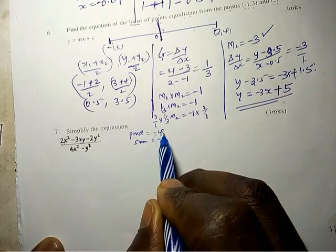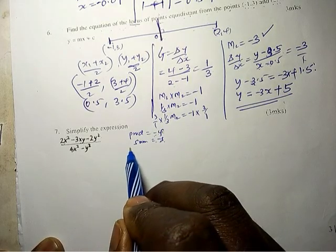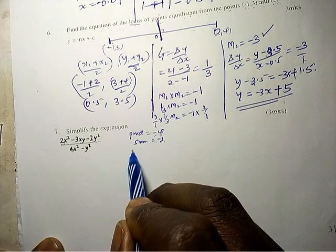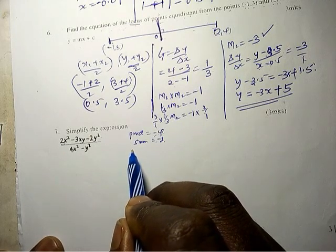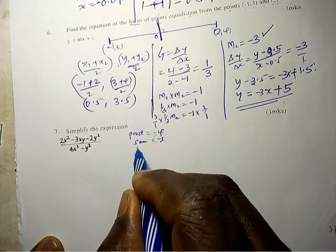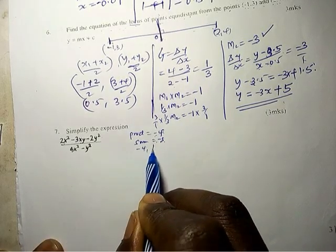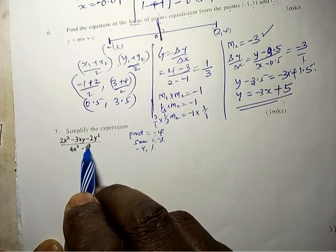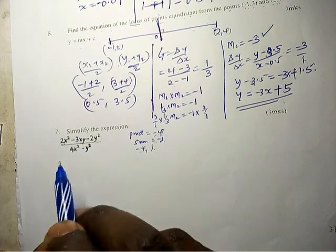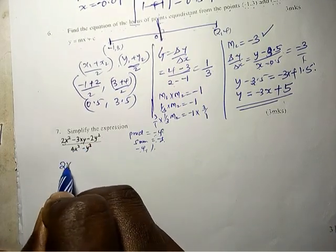So the numbers will be negative 4 and 1. Yeah, so 1 plus negative 4 the answer is going to be negative 3. So now we have 2x²...